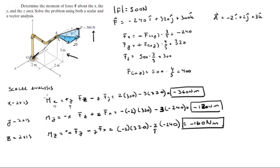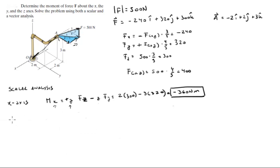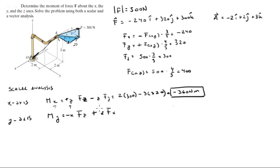Now the Y axis. My is given by the other two components — X and Z. Right-hand rule: aim toward X, close toward Z — that's negative; aim toward Z, close toward X — that's positive. Replacing the numbers: negative(-2 times 300) plus 3 times (-240), which comes out to be negative 120 newton-meters.